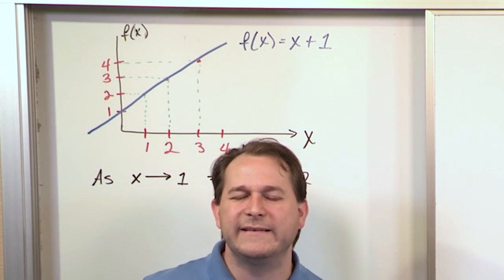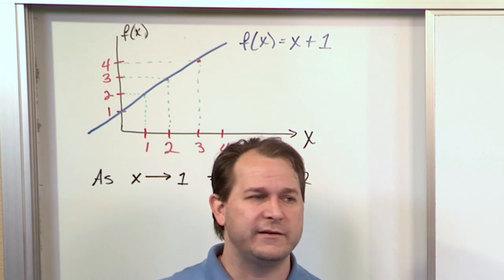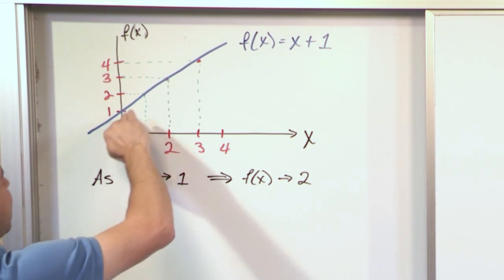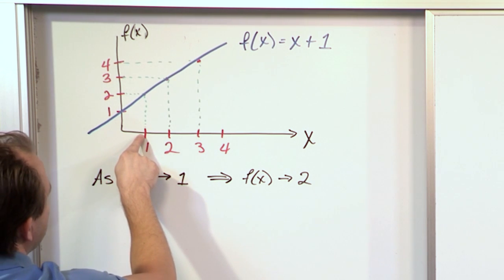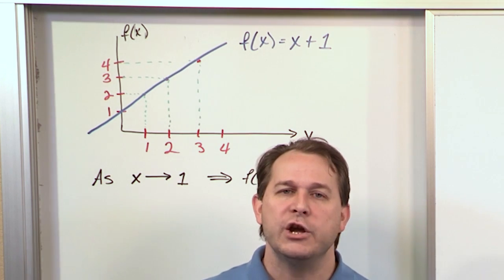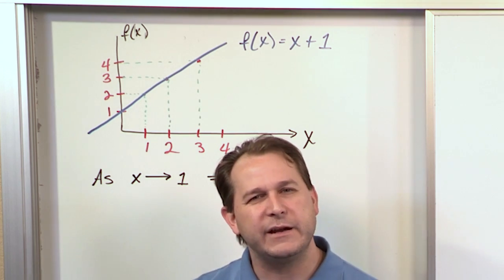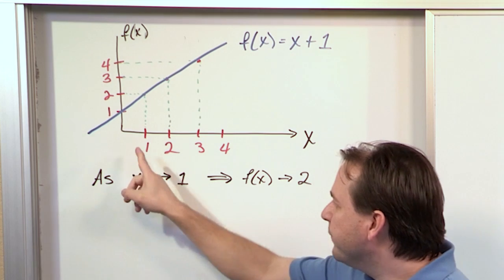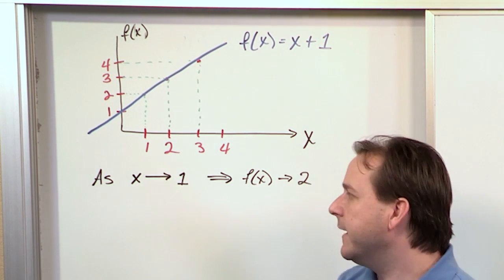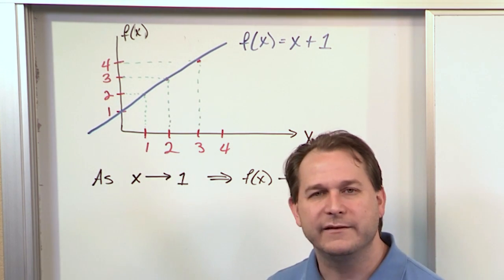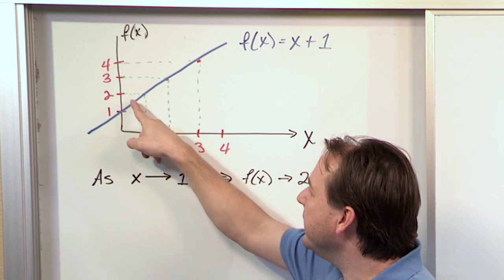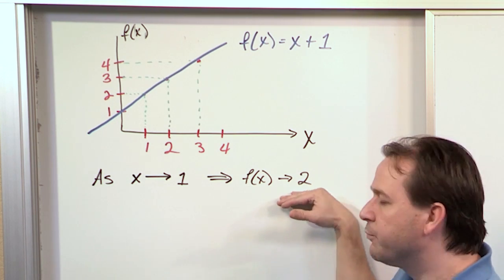It's important to understand — and I'll reinforce this a lot — that when you're taking a limit, you don't ever actually let x equal 1. You just get really, really close to it. You're getting infinitely close, but you never actually arrive at 1. The reason why will be explained later, but whenever you walk along this function to see how it behaves, you never ever actually get to x = 1. As you do this, you walk along the line and get infinitely close to the point where f(x) = 2. So we say: as x approaches 1, the function approaches 2.